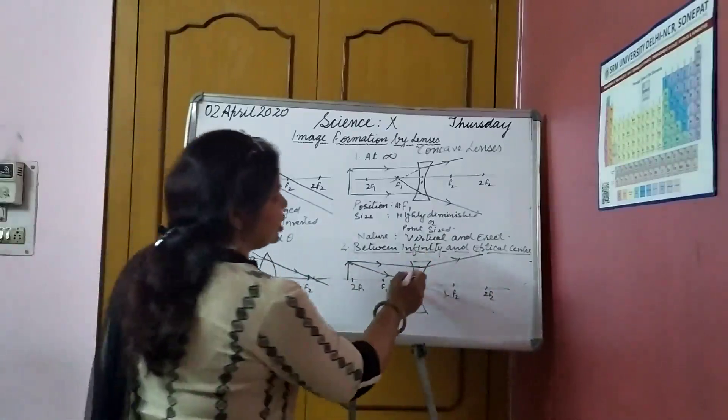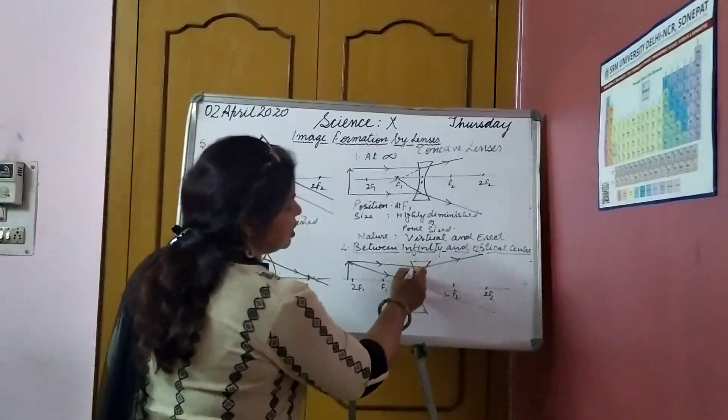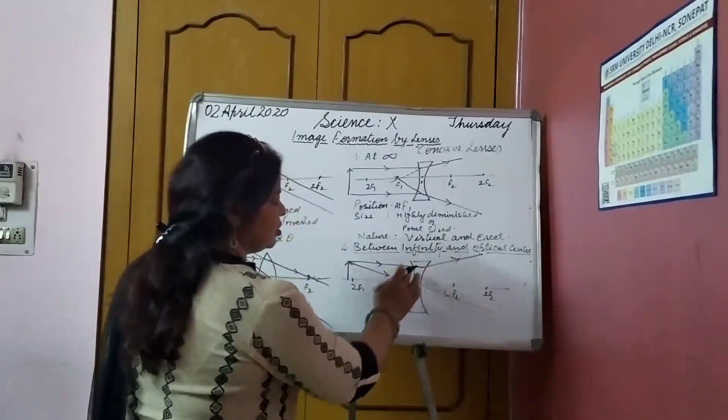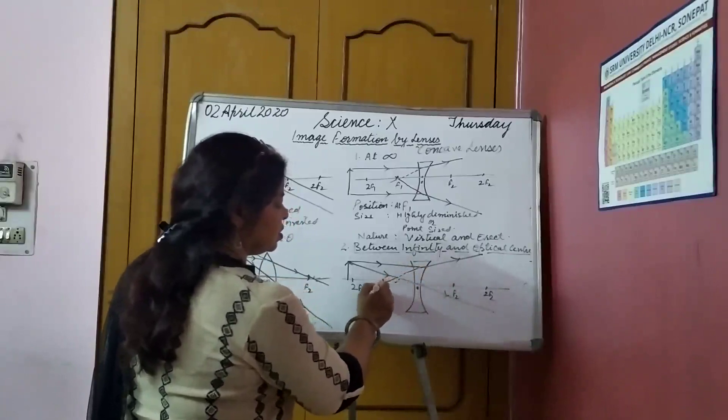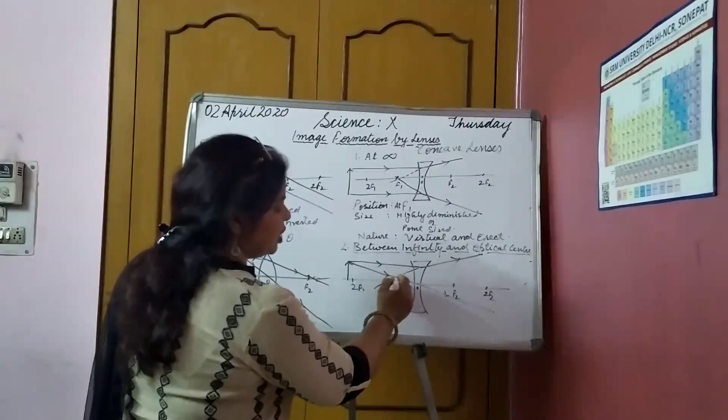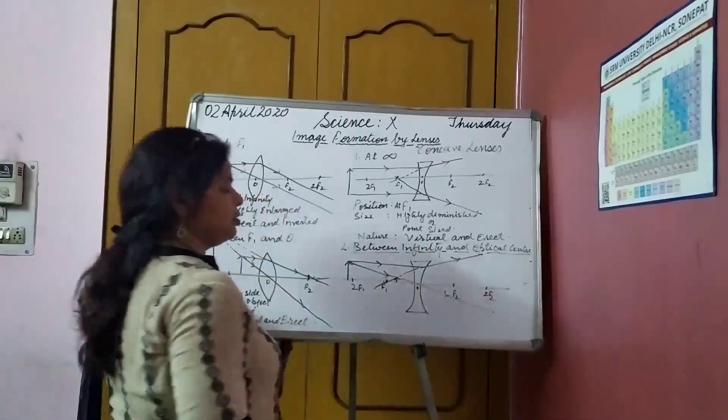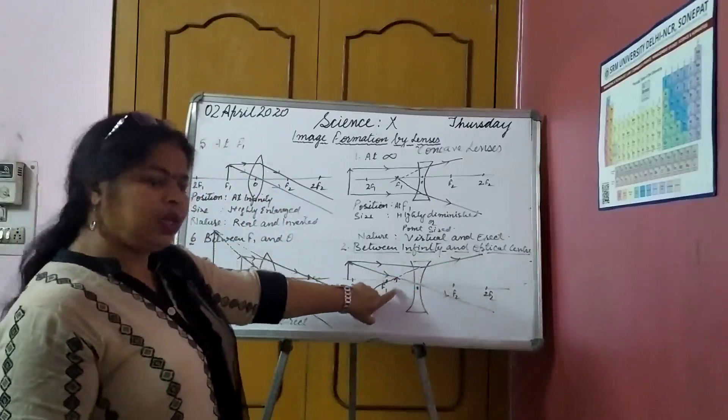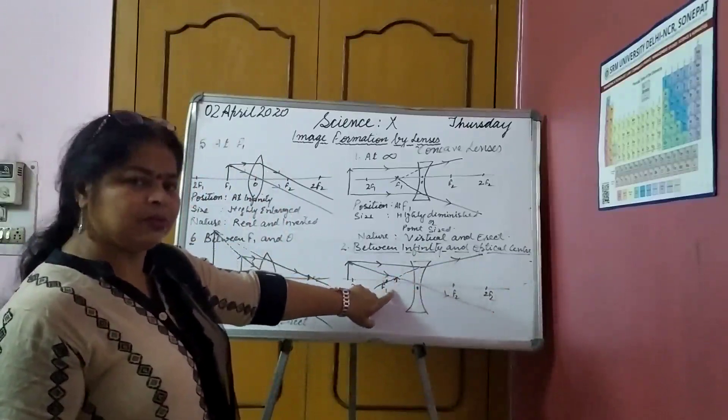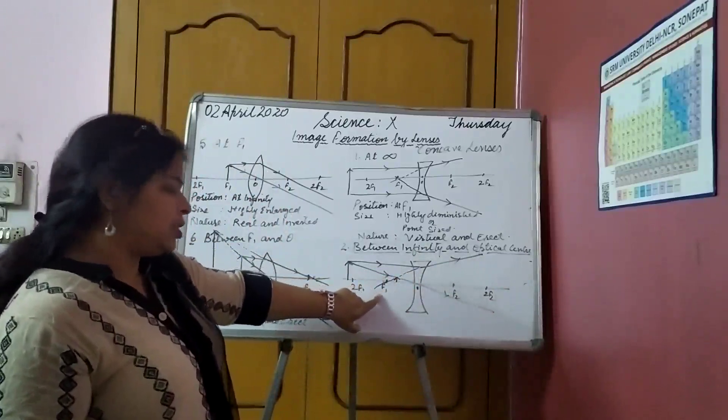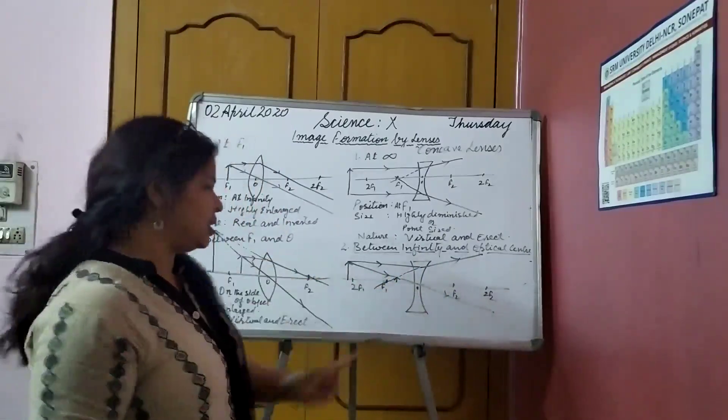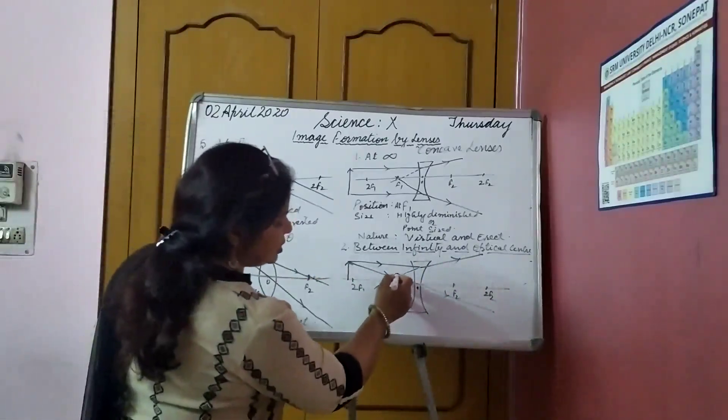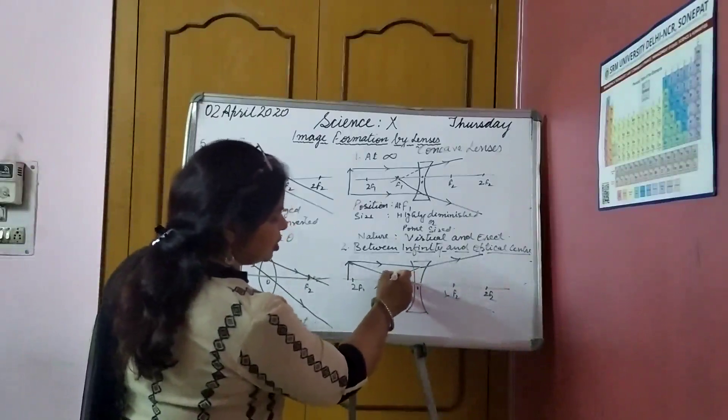So, what is the other option? We are going to extend it. So, this is the point where they are intersecting. The virtually extended ray, okay, which is passing through f1 and the one which is passing through optical center. So, here is the image formed.